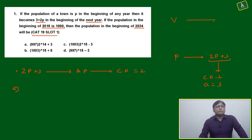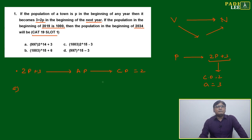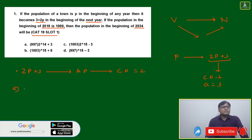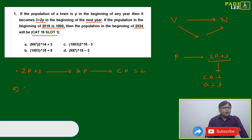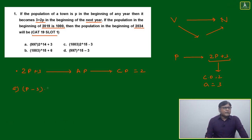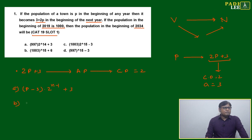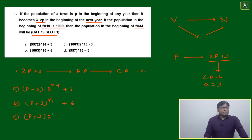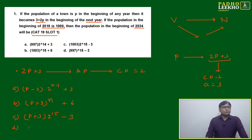Another approach: since it is given in variable format and the solutions are in number format, we can reconvert by writing all the options in terms of variable. For example, 997 can be written as (P minus 3) times 2 to the power (n minus 1) plus 3. Similarly option B can be written as (P plus 3) to the power n plus 6. Once you understand this, you can guess quickly and that guess will be almost perfect.